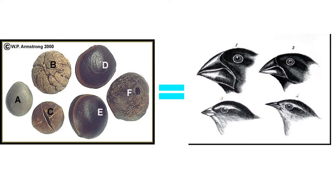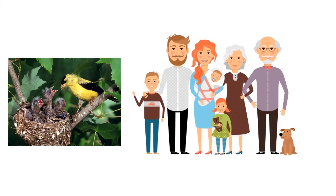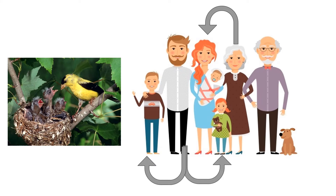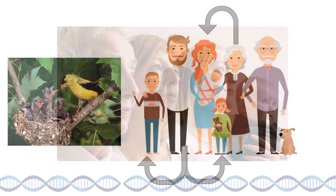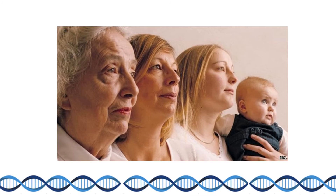In short, the Grants observed that these finch populations would adapt their body size, beak size, and beak shape in response to the composition of the seeds produced each year. Like the finches, parents can pass along desired traits to their children. That is why you might resemble your mom, dad, brother, or even great-grandfather. Traits are passed down in the form of genes throughout families.